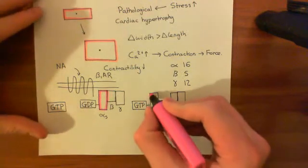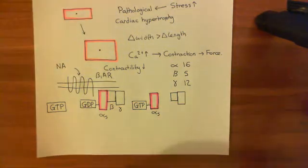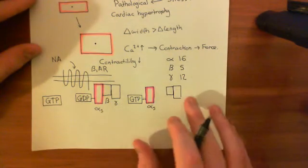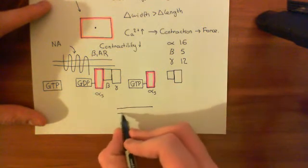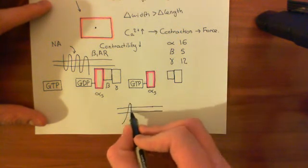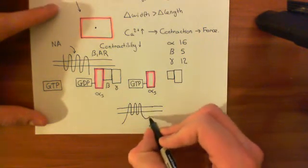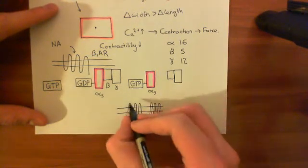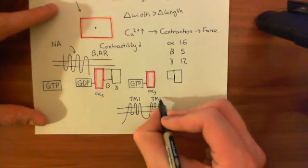The G-protein has now split into two portions. The alpha-S·GTP is going to activate an enzyme in the cell membrane known as adenylyl cyclase. The structure of adenylyl cyclase spans the membrane in two transmembrane domains: TM1 and TM2, each containing six membrane-spanning alpha helices, with an amino terminus and a carboxyl terminus on the cytosolic side.